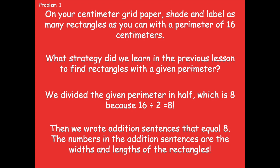We divided the given perimeter in half, which is 8, because 16 divided by 2 equals 8. We're taking the total perimeter of 16, cutting it in half by dividing by 2, and getting 8. Then we wrote addition sentences that equal 8 — the numbers in those addition sentences are the widths and lengths of our rectangles. Does that sound familiar from our previous lesson?